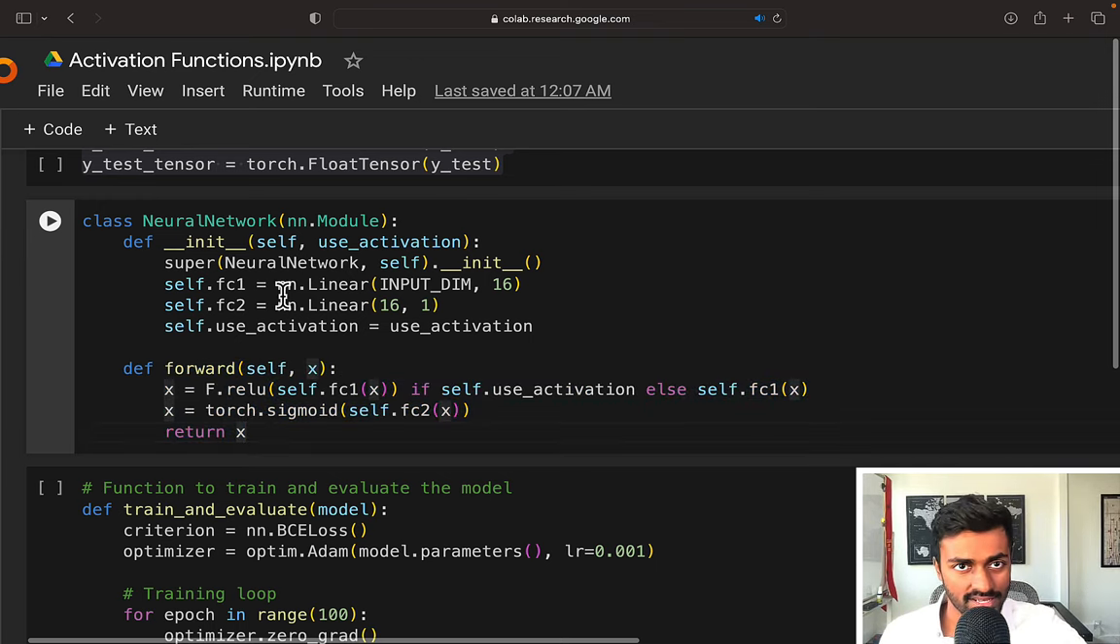And accordingly, we define a forward function. This function is going to override the super class that is the Torch module's forward function and is executed on the forward pass. So we pass in an input. The input may or may not use an activation function depending on whatever useActivation is. And then because it's a classification problem, we are going to wrap it around a sigmoid.